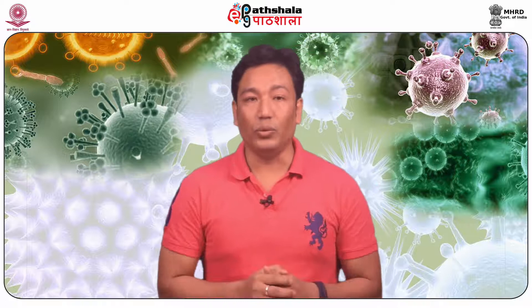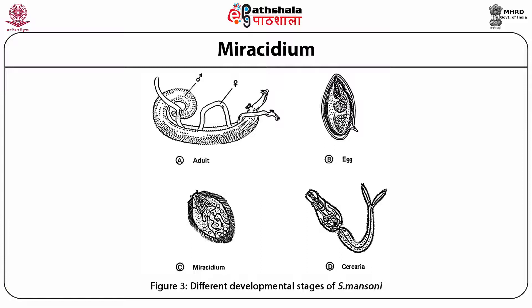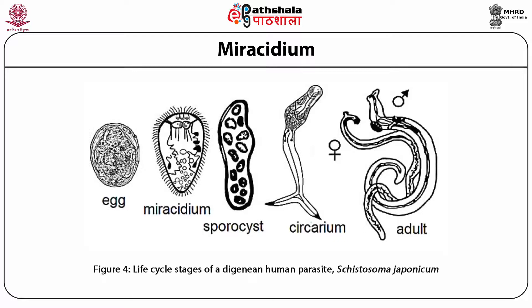The miracidium has a variety of sensory organs connected to a nervous system. It has a pair of posterior flame cells and a pair of anterior flame cells comprising the excretory system. These are sexually differentiated forms of parasite. The energy required by the miracidium allows four to six hours to reach an appropriate freshwater snail host. The snails are the intermediate host for the miracidium. This figure represents different developmental stages of Cystosoma mansoni: A — adult, B — egg, C — miracidium, D — cercaria.